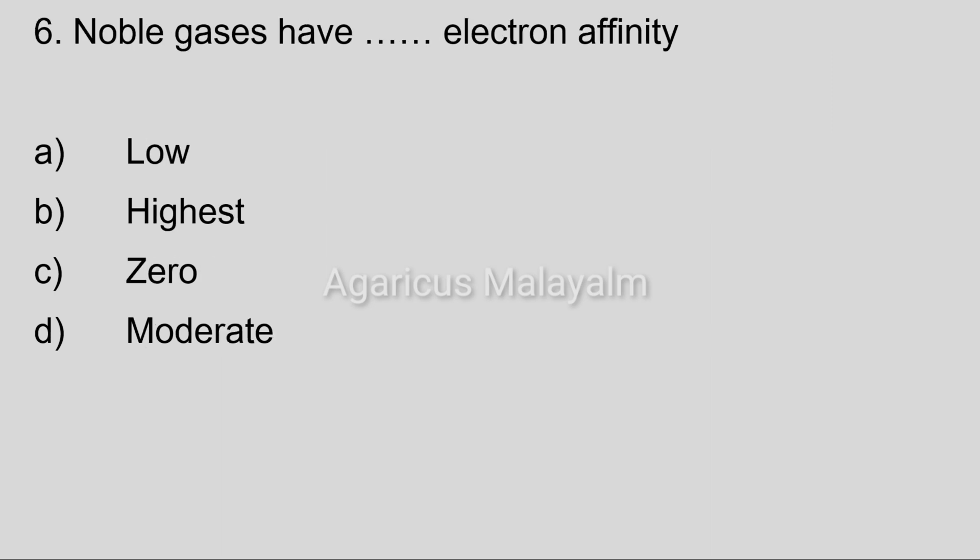Sixth question: Noble gases have what type of electron affinity? Option A: Low. Option B: Highest. Option C: Zero. Option D: Moderate. Correct answer: Option C, Zero.